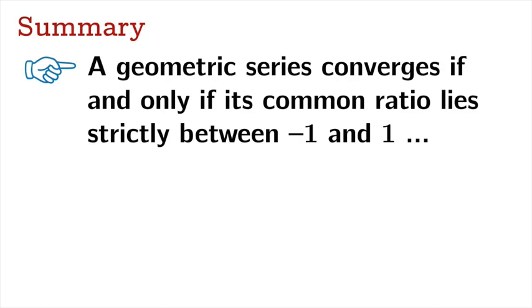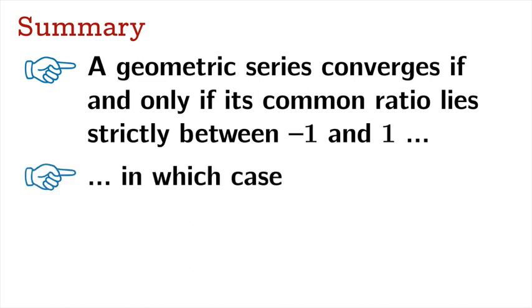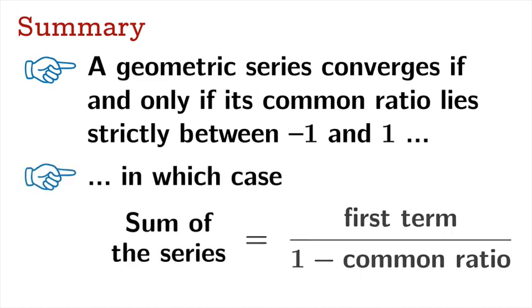In summary, a geometric series converges if and only if its common ratio lies strictly between negative 1 and 1, in which case the sum of the series is the first term over 1 minus the common ratio. Remember this formula and you'll be able to evaluate a lot of different infinite series.